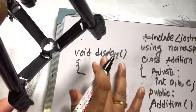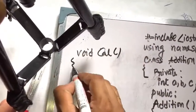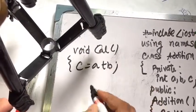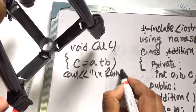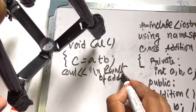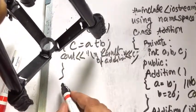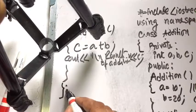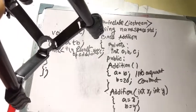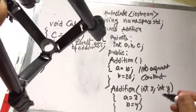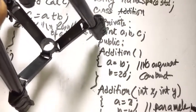There is also void cal (calculation), where c = a + b, and cout prints the result of addition. This is the end of the class. This simple program has two constructors: one no-argument constructor and one parameterized constructor.